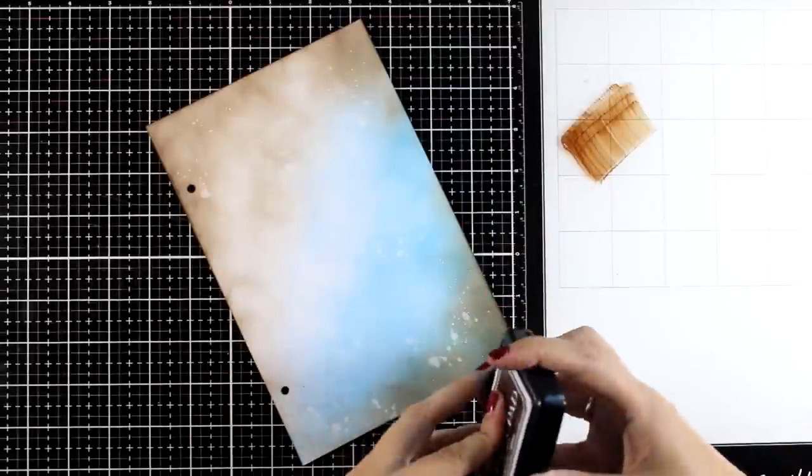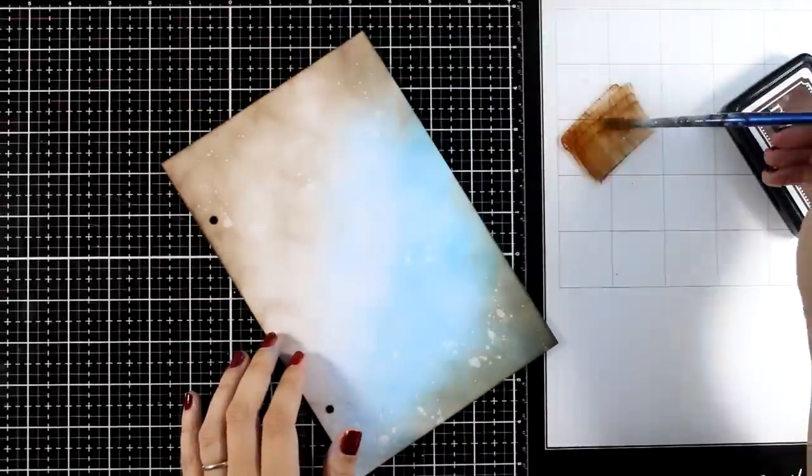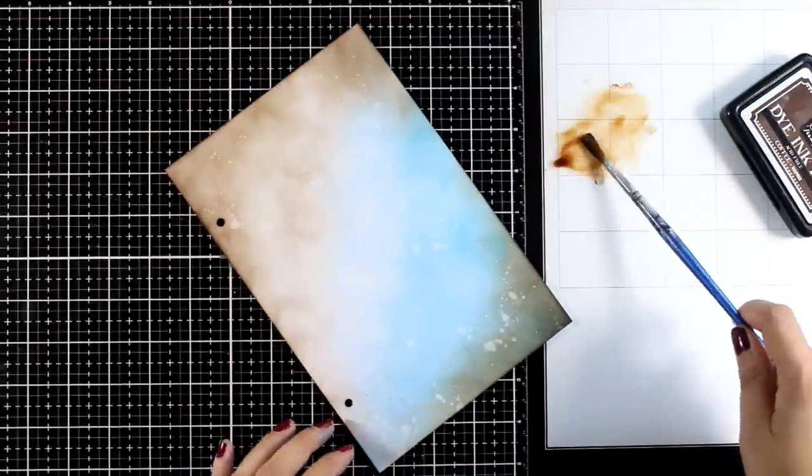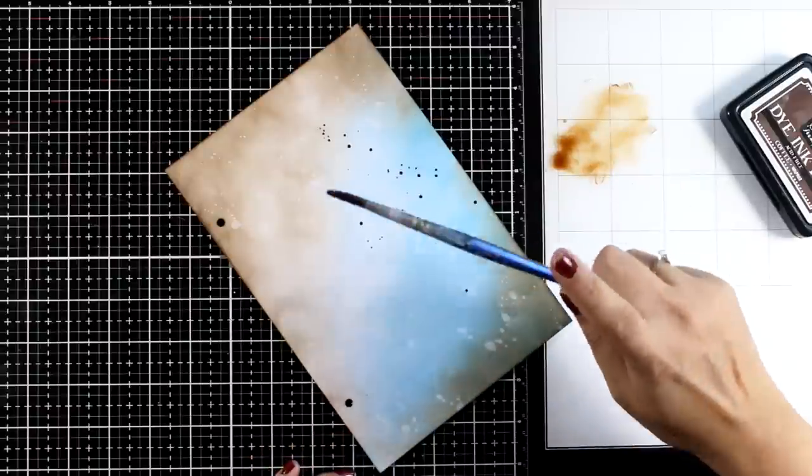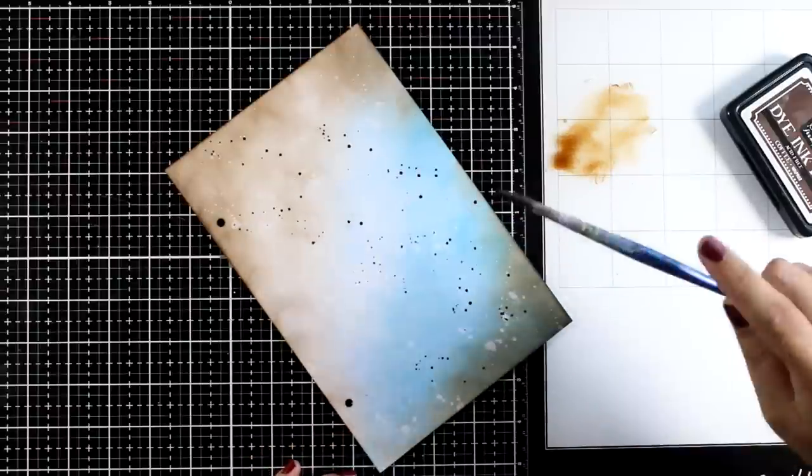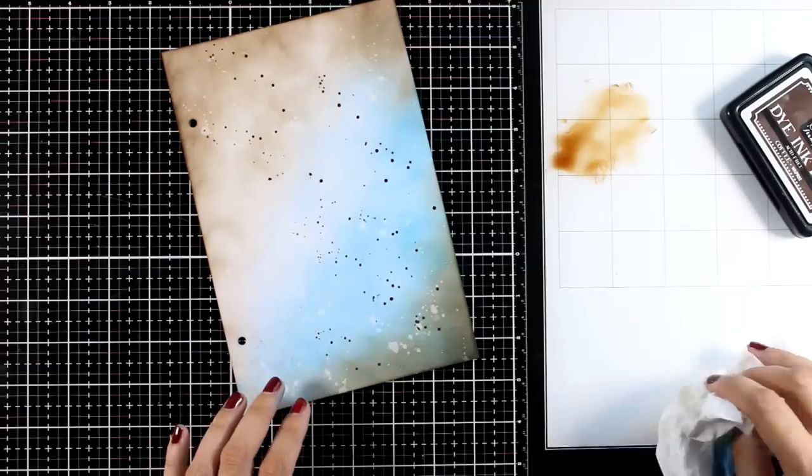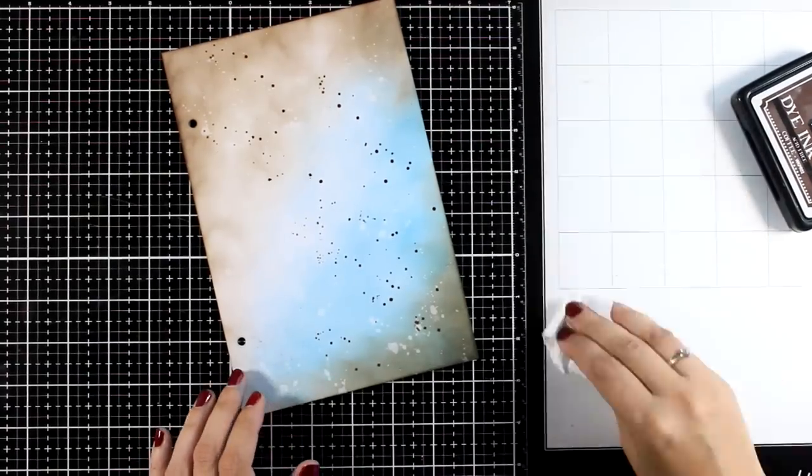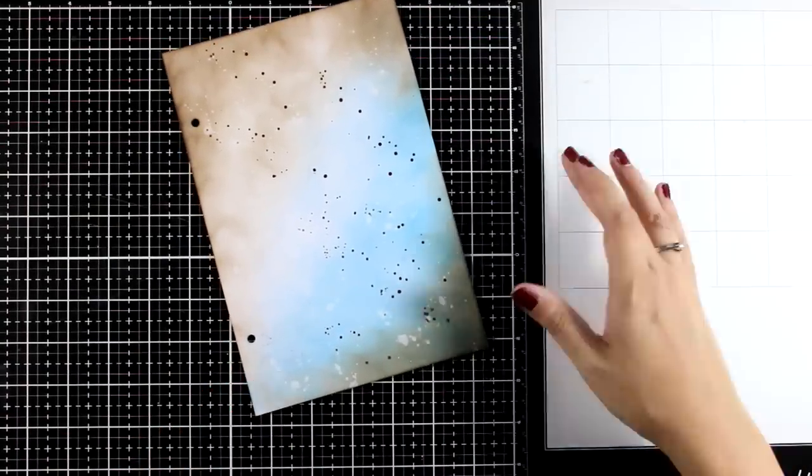Now I'm also going to add some colored splatters and that's by wiping my coffee dye ink on my glass mat. I'm adding a little bit of water and you can see this can work as a watercolor if you like. Now we are done with step number two which are splatters.